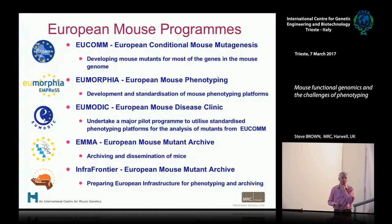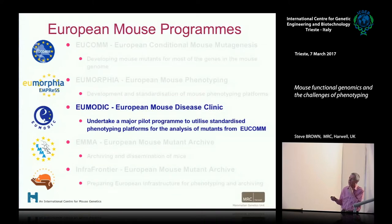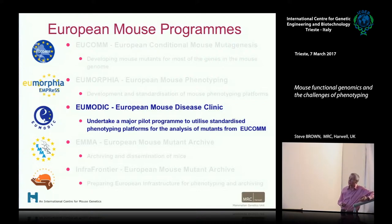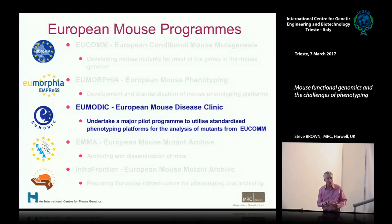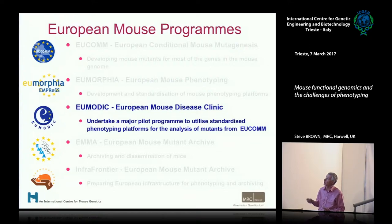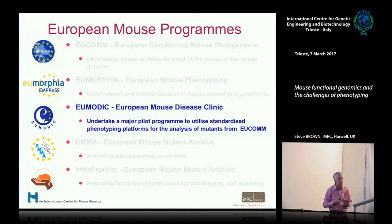The challenges of phenotyping: Eumorphia set up our standardized phenotyping platforms and pipeline. Now let's apply it in a project which began around 2005-2006. It was a major pilot program to utilize these standardized phenotyping platforms for the analysis of a large number of mutants coming from another European program called EUCOM — the European Conditional Mouse Mutagenesis program — which was developing mouse mutants for most of the genes in the mouse genome. We were making the mutants; now we have the phenotyping pipelines to analyze them. Let's put them together.